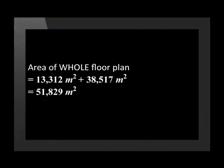Now that we have the individual areas, it's easy to calculate the whole area of the floor plan — we simply add all the individual areas together. We add the areas and get 51,829 metres squared. Rounded to two decimal places, this is 51,83 metres squared.